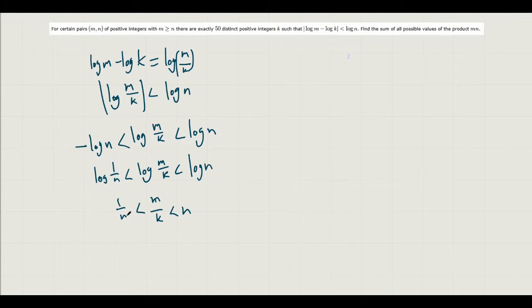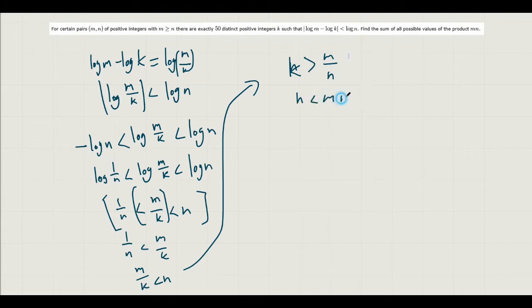So from this inequality, we can actually put stuff in terms of k by considering this inequality first, and then this inequality: 1 over n less than m over k, and m over k less than n. So acting as if these were separate inequalities, we can put these in terms of k to get k is greater than m over n, and k is less than mn.